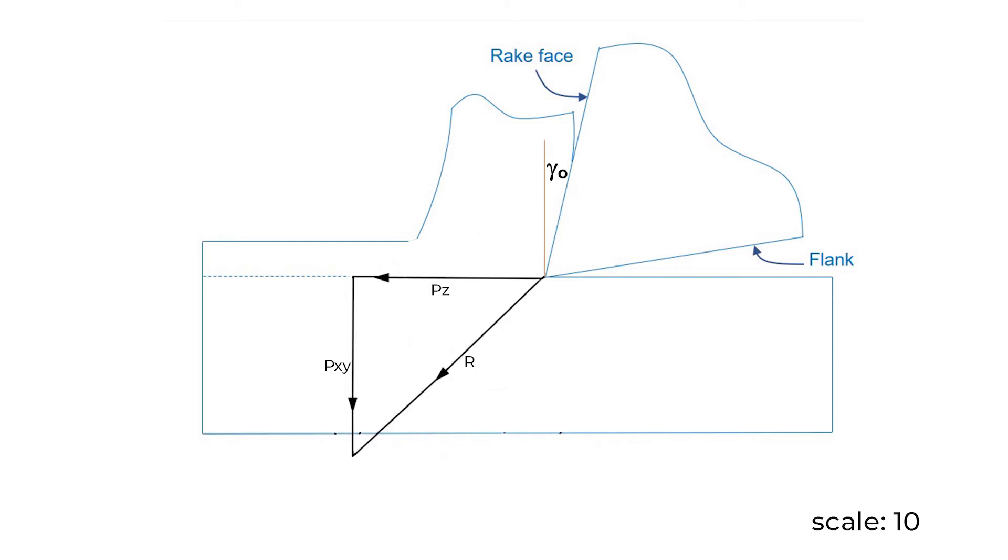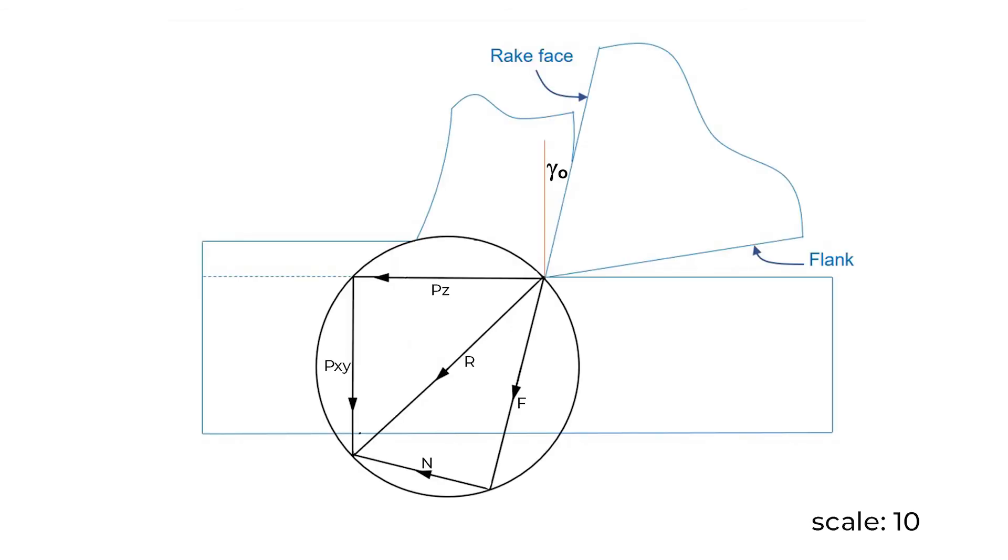Find the resultant R. Draw the merchant circle with R as the circle's diameter. Draw the friction force F at an angle gamma to the vertical line until it intersects the circle. Gamma is the rake angle. Draw the normal force perpendicular to the friction force. This line will meet the other end of the R.